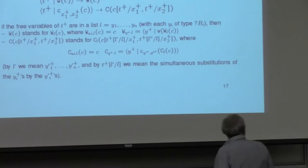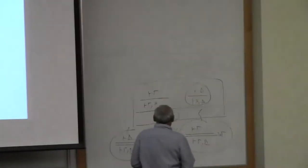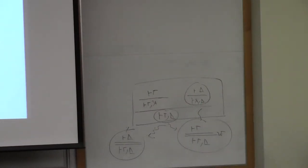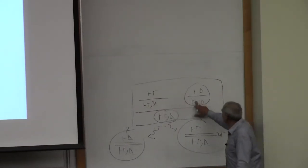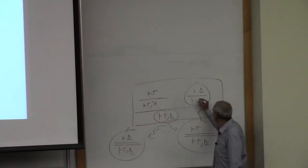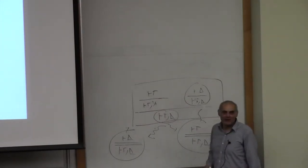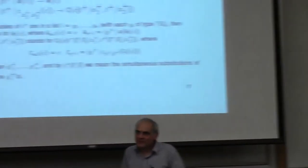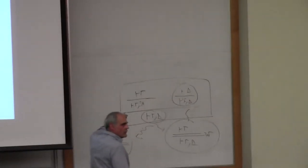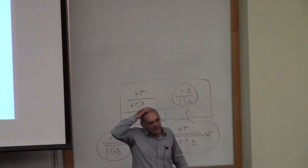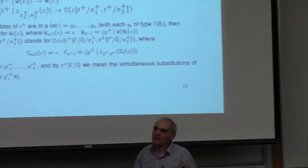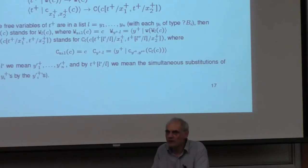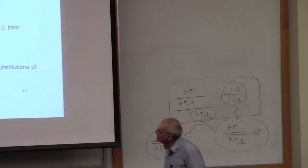Why does linear logic do something about this? It's because weakening is only allowed on a ?A formula, and the dual of a ?A formula is not a ?A formula — it's a !A-bar formula. But you are not allowed to do weakening on a !A-bar formula. So this is a more precise explanation of the claim I gave yesterday that linear logic solves this problem of confluence through typing, through more information on the formula.